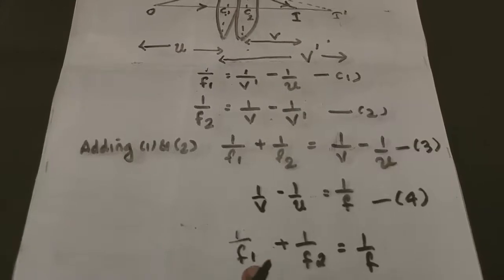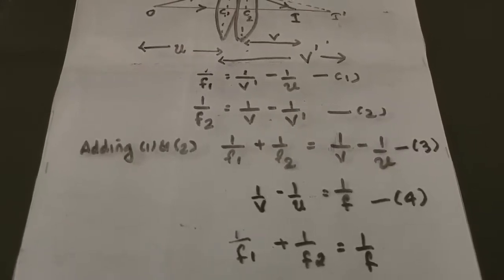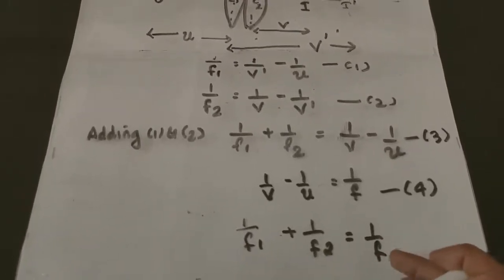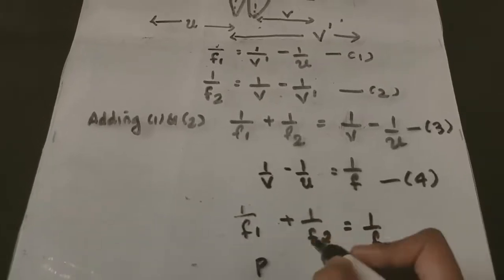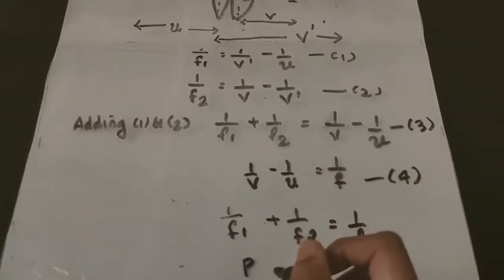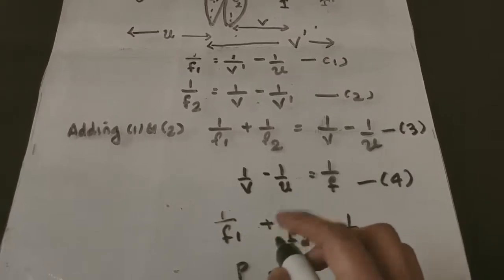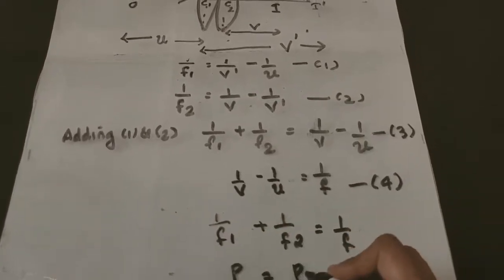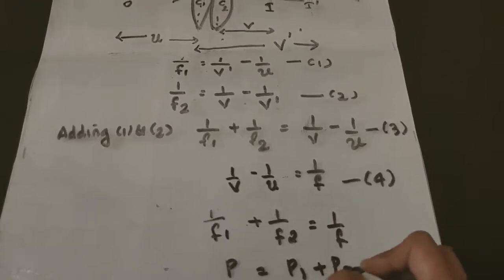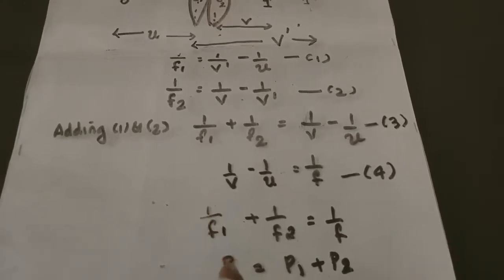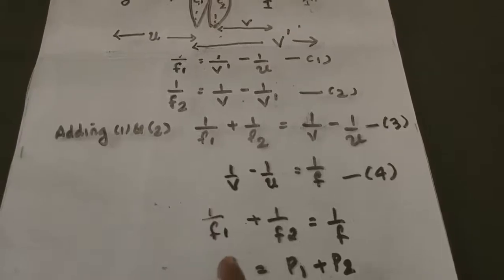Now, what is the reciprocal of focal length? It is the power of a lens. So 1/F equals the power of the combination. The power of the first lens is P1 = 1/F1 and the power of the second lens is P2 = 1/F2. Therefore, when we use two lenses in contact, the equivalent power P = P1 + P2.